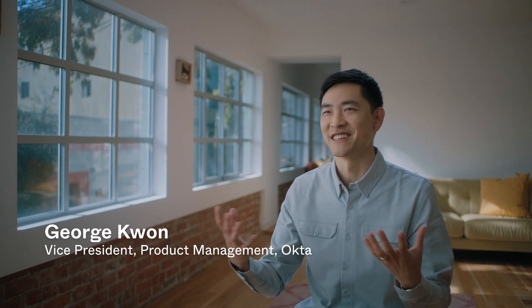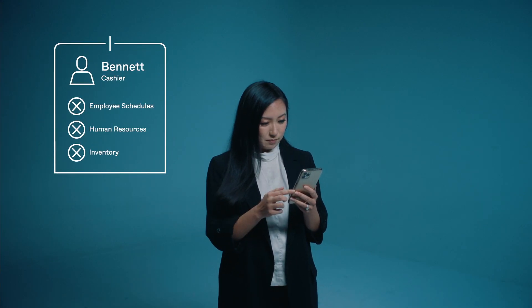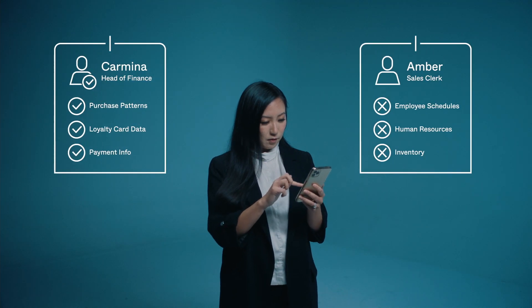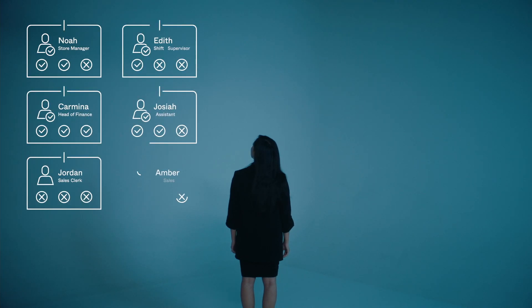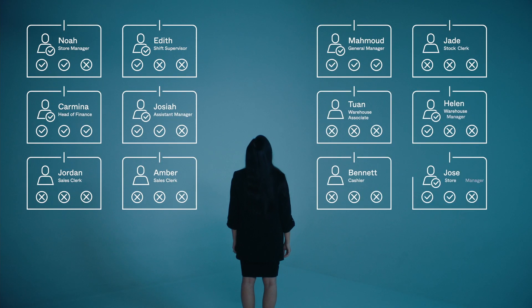When you use the words 'identity governance administration' it definitely doesn't jump off the page. 'Who has access to what?' — it's a pretty simple question, but actually a really complex task. In a typical organization you have thousands of people and hundreds of things that they can access. You have to think about all of these different people within your organization — you probably have a bunch of employees who work within your stores and they may have accumulated all of this access over time.